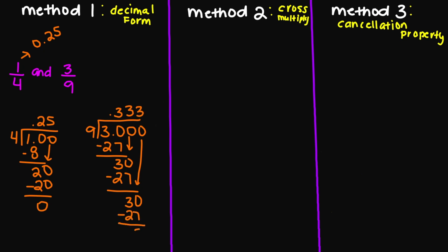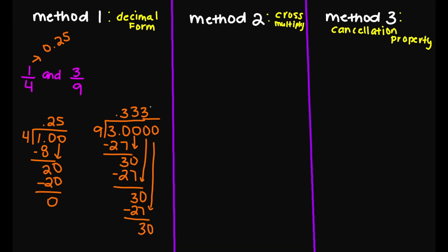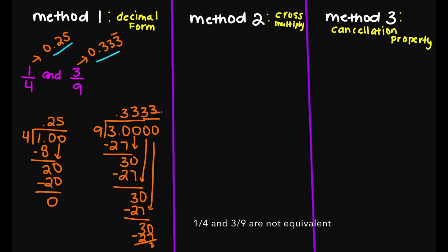30 minus 27 is going to equal 3. If I try one more time — 9 goes into 30 three times, 9 times 3 is 27. So as you can see, we have 0.333 repeating all the way down. So my fraction here is going to equal 0.333 repeating. Based on these two examples, we know that these two fractions are not equivalent because my decimal numbers are not the same — we have 0.25 here and 0.333 repeating here.